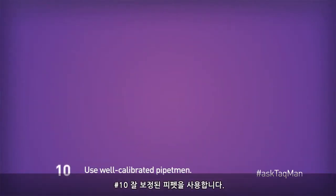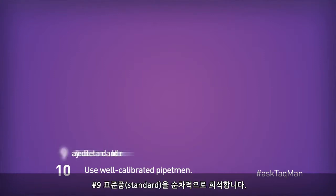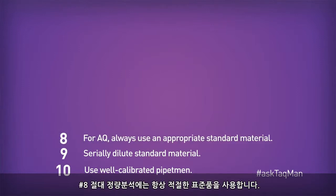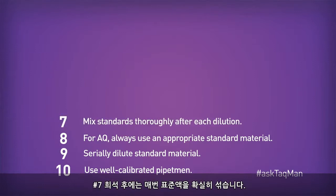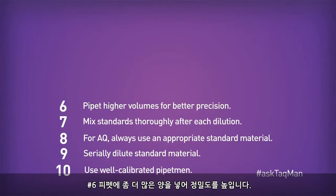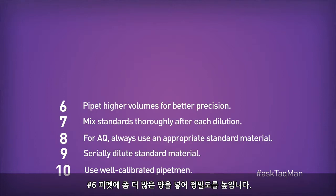Number 10: use well-calibrated pipettes. Number 9: serially dilute standard material. Number 8: for absolute quantification, always use an appropriate standard material. Number 7: mix your standards thoroughly after each dilution. Number 6: pipet higher volumes for better precision.